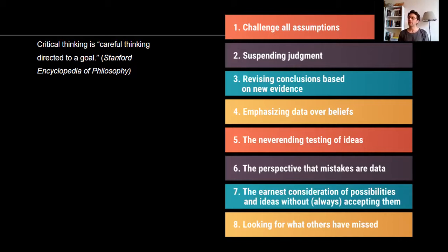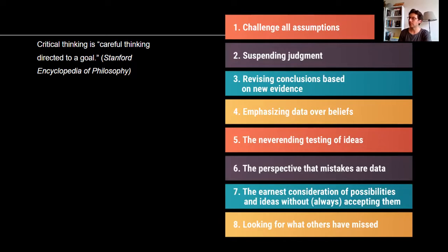The fourth step tells us to emphasize data over beliefs — also part of scientific thinking. Whenever there is data and evidence, we should use that over beliefs not supported by evidence or observations. The fifth step tells us there is never-ending testing of ideas in critical thinking. You should always test your ideas, and whenever you find new evidence or new data, you make new ideas and test them with even newer data. You should never stop in this process.